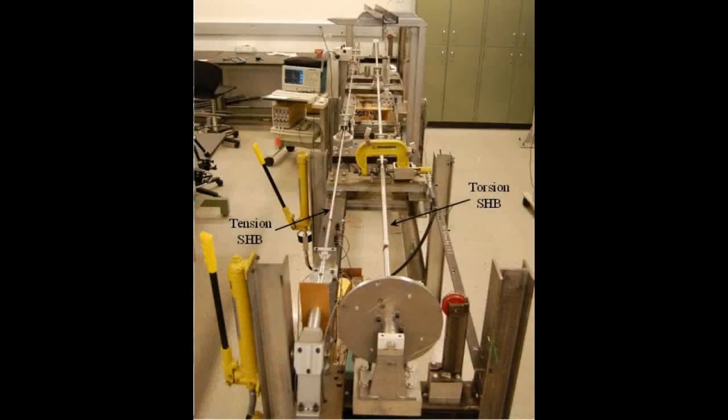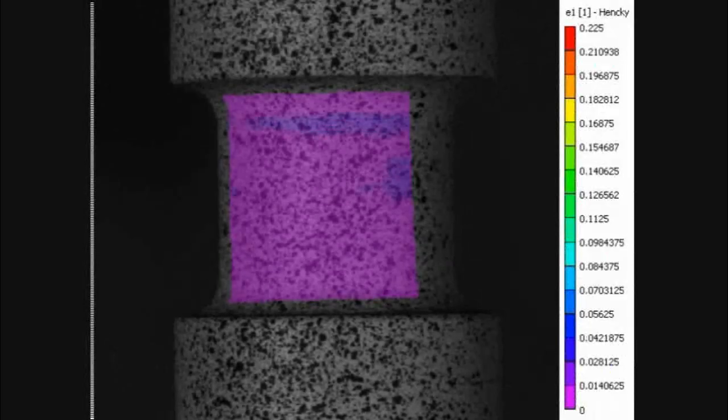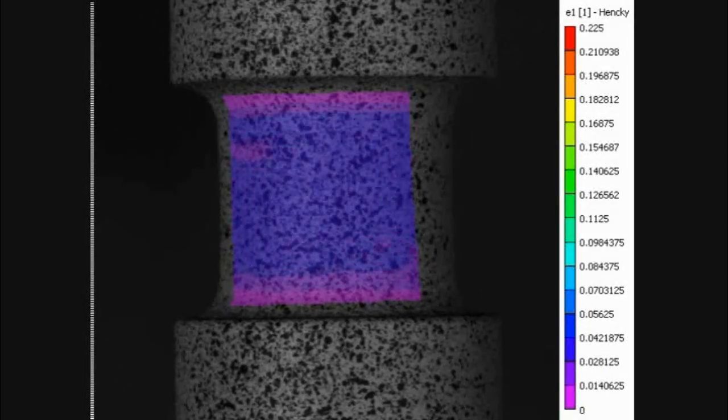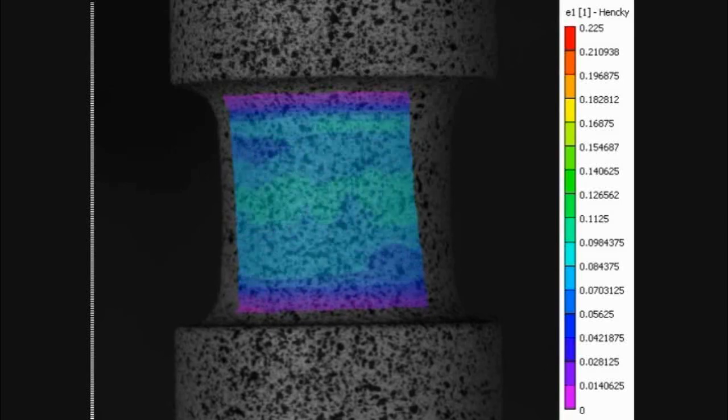Examples of research in experimental mechanics include tension torsion tests on aircraft structural components. This test shows the maximum principal strain on the surface of a high-strength aluminum tube.